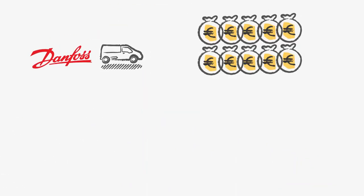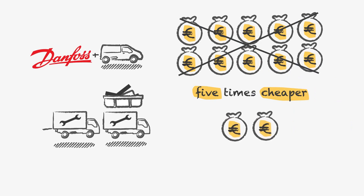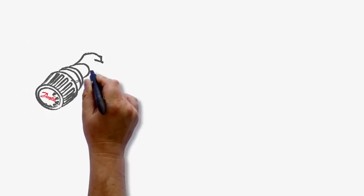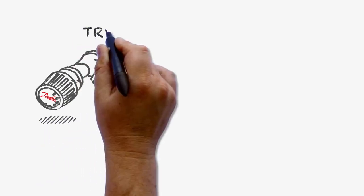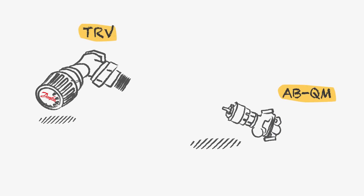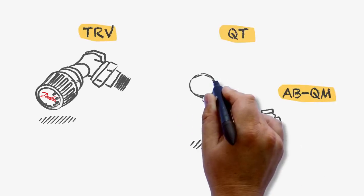And the good news is that the investment is about five times cheaper than a renovation to a completely new two-pipe system. All you need is a thermostatic radiator valve, an ABQM pressure-independent balancing valve, and a thermostatic controller.